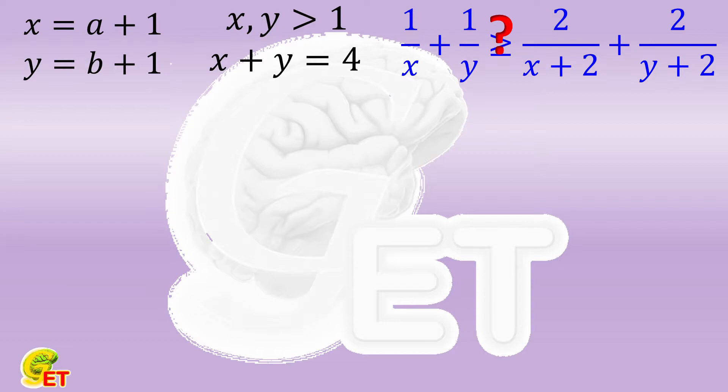In fact, it is not very difficult to prove this conclusion by using a straightforward calculation, but the process of proving it with the help of the relationship between the harmonic mean and the arithmetic mean will be more beautiful. Let's illustrate both ways. First, let's do it by using the straightforward calculation.